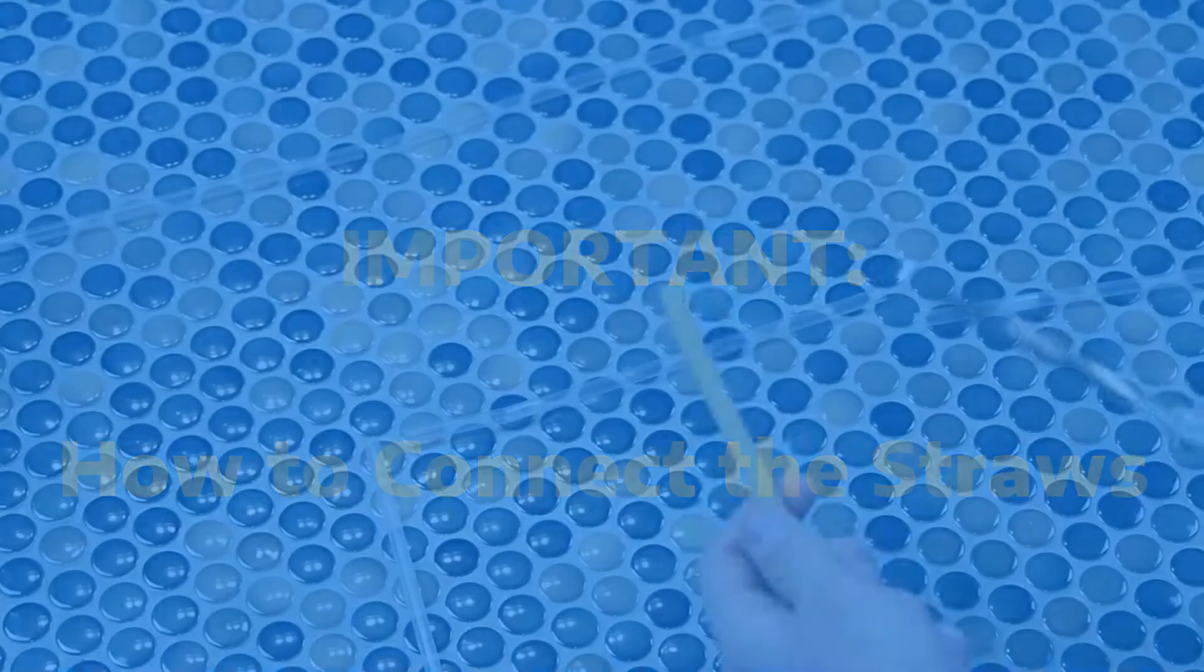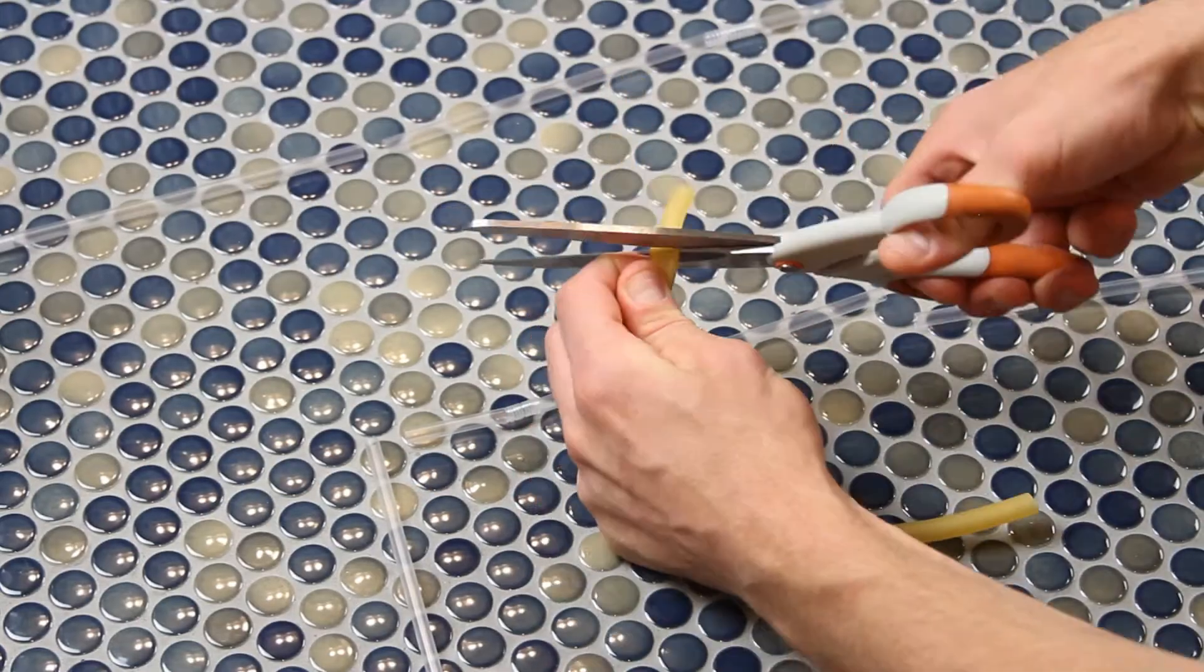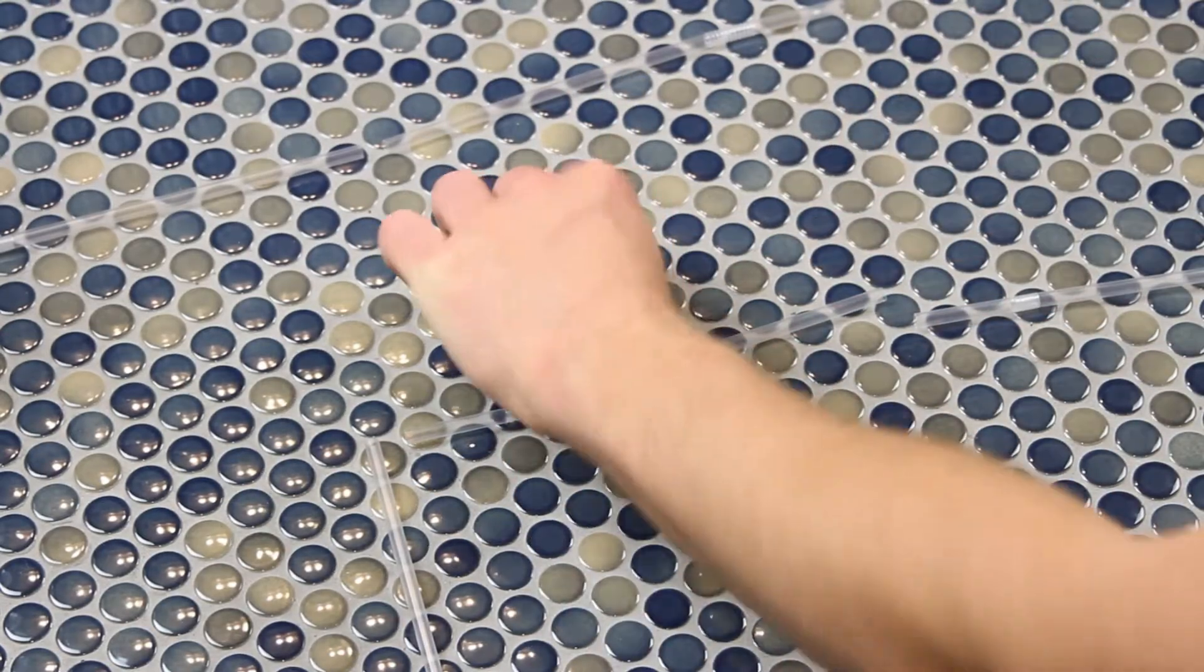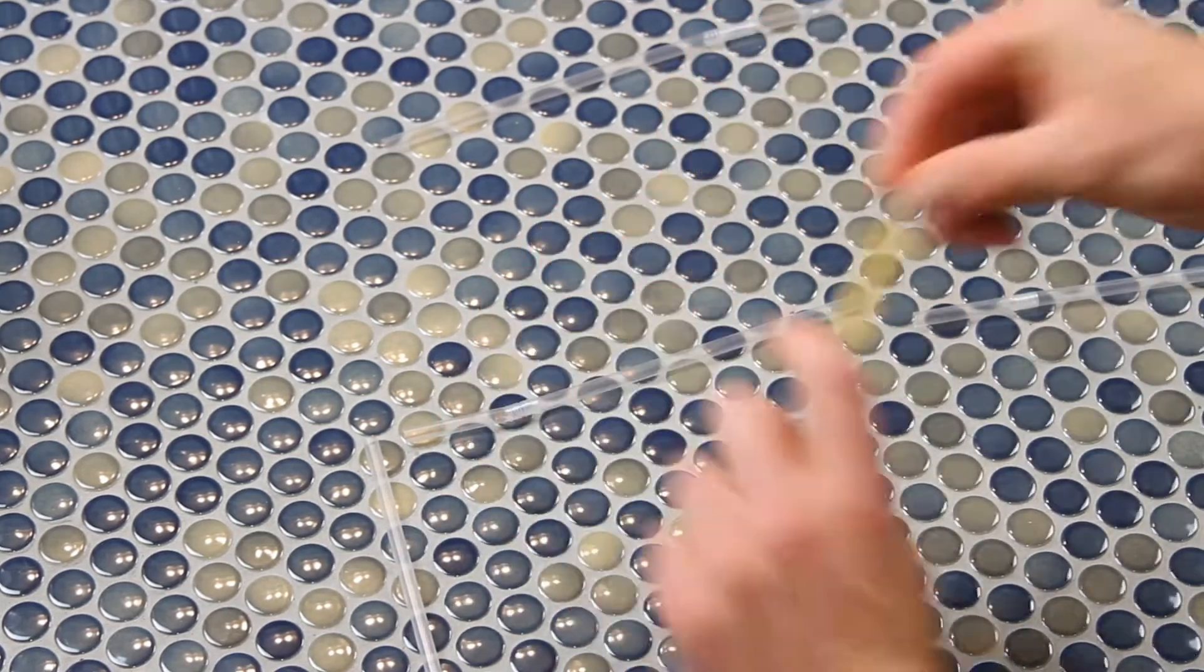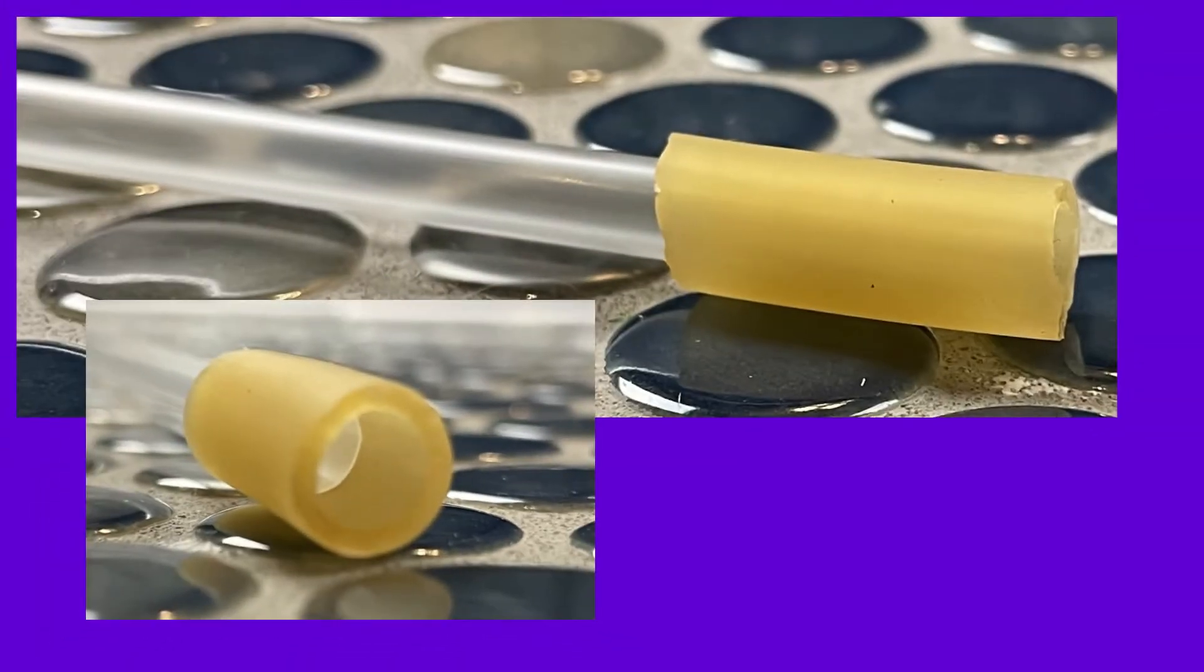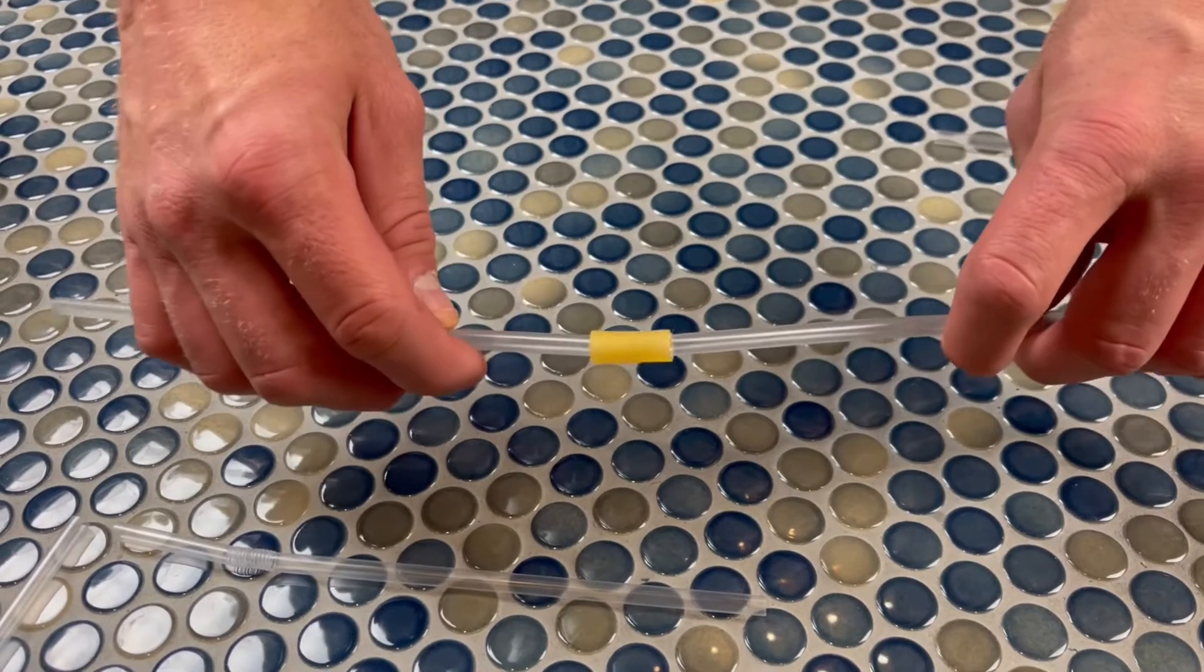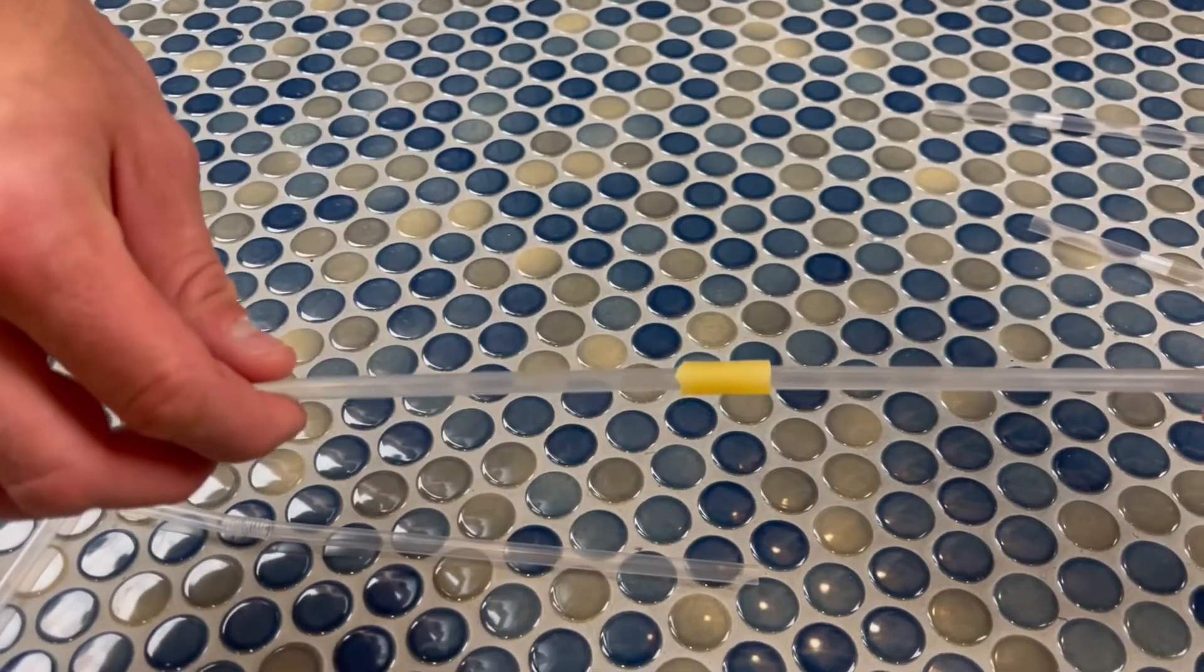The most important part of this project is making sure your straws are connected well. We're going to use this rubber tubing to make those connections. Start by sliding it onto one straw like a sleeve. You really don't need a long piece at all. If you want to do it the easy way, you can just slide both straws into the sides until they meet in the middle.